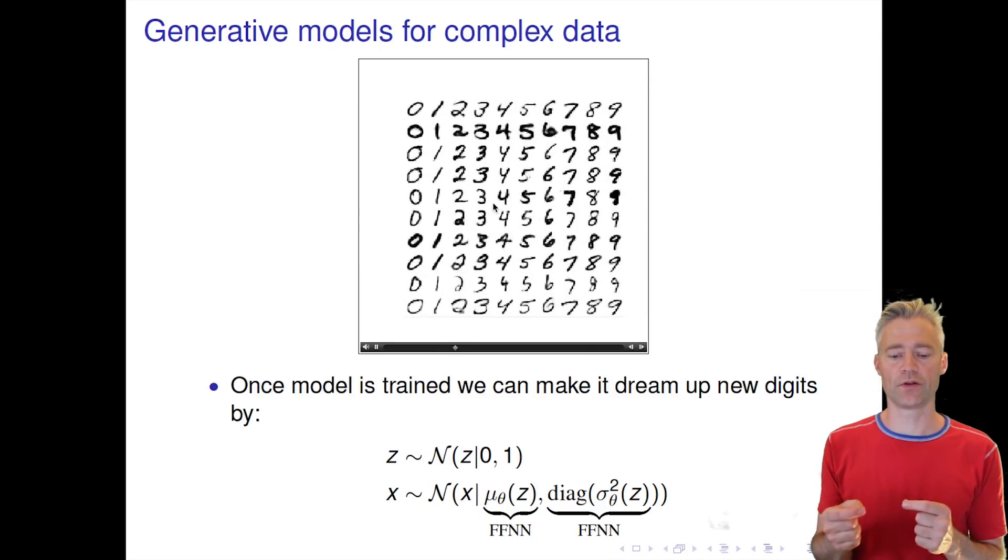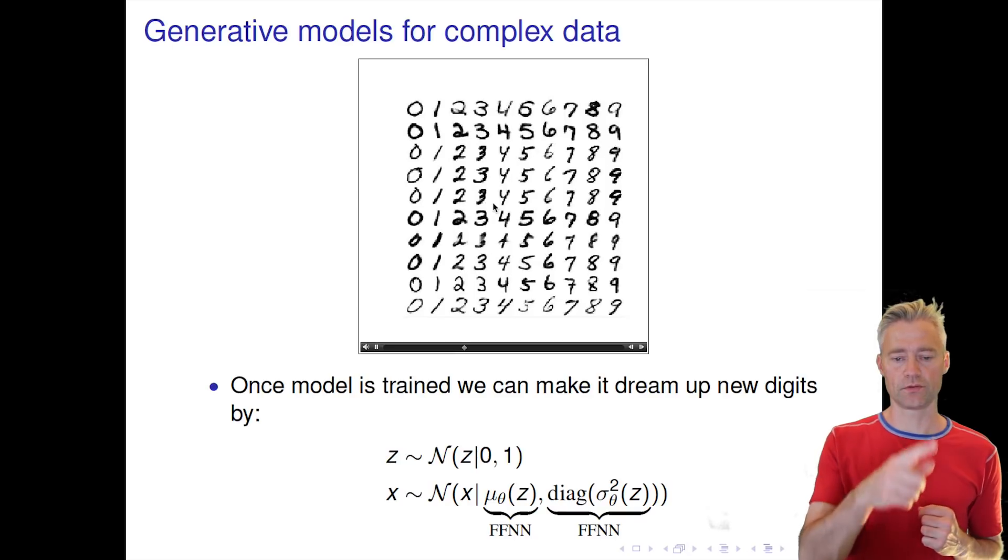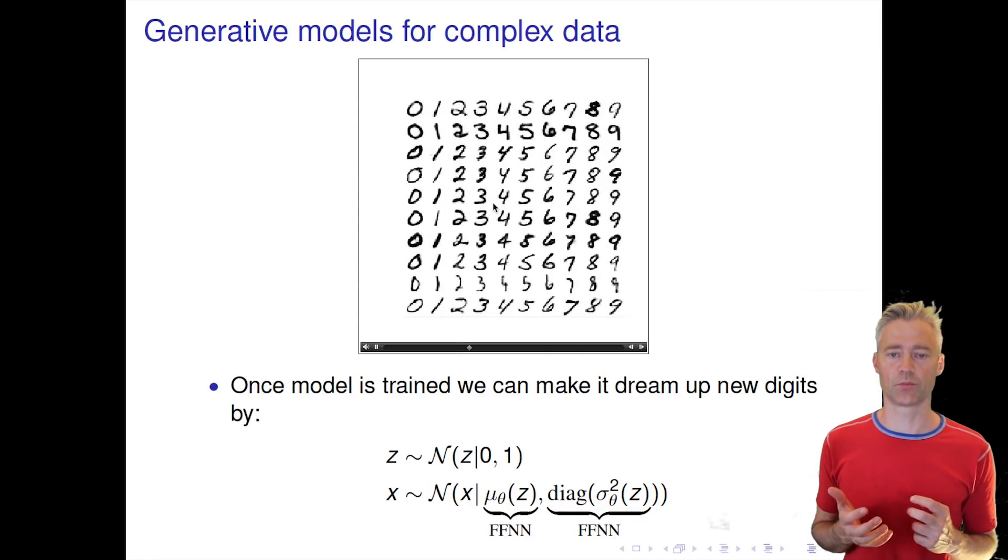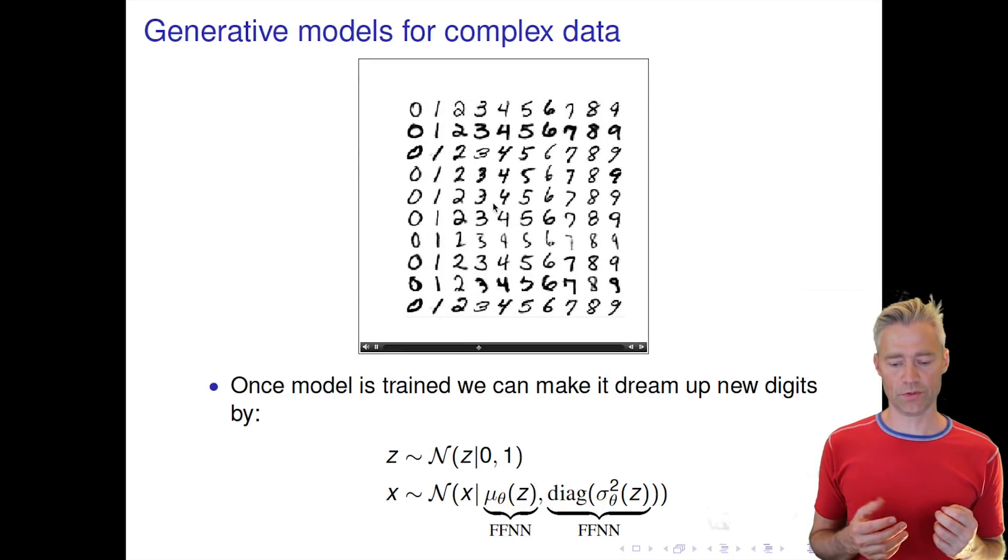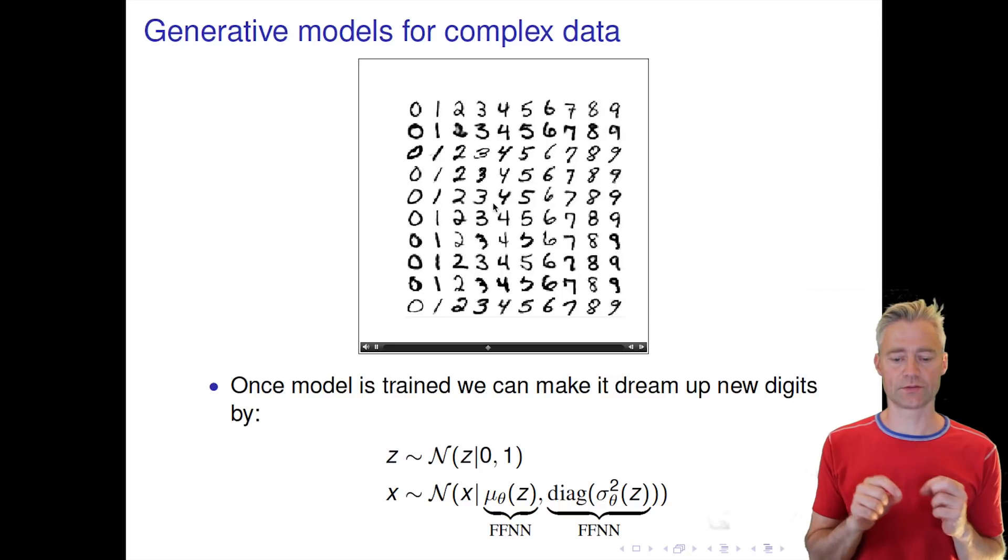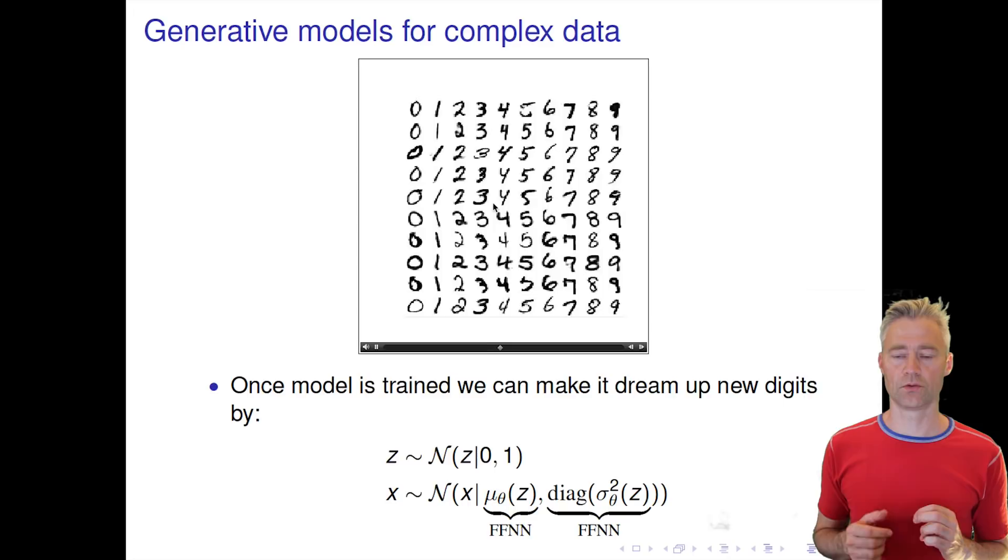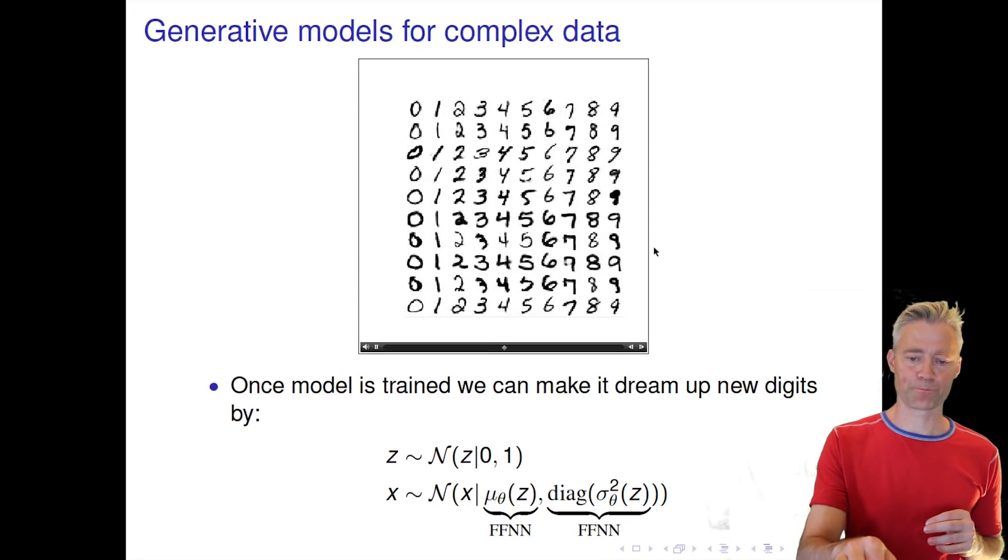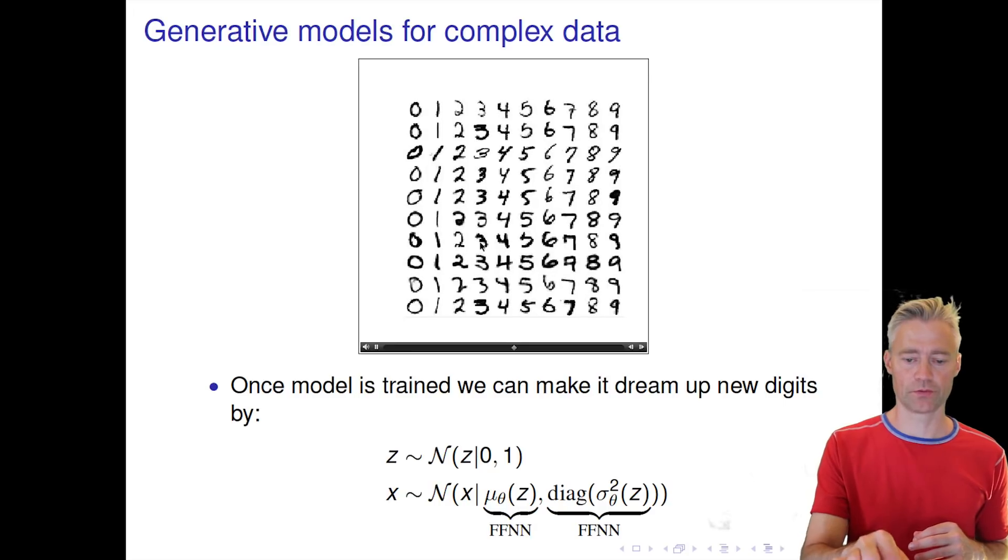Then we can draw an x from that. You can see this is how we actually generated these examples, and despite that we don't model covariances between the different x's, we actually draw some pretty convincing digits with similar statistics as the real MNIST digits.